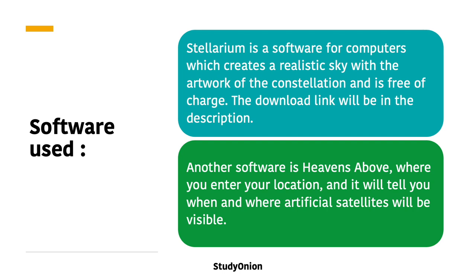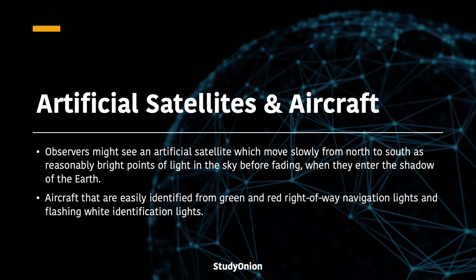Finally, I just want to talk about artificial satellites and aircraft. Observers might see an artificial satellite moving slowly from north to south as a reasonably bright point of light, before it fades when it enters the shadow of the Earth. Aircraft are easily identifiable through their green and red right-of-way navigation lights and flashing white identification lights, so if you see flashing coloured lights, it may well be an aircraft.